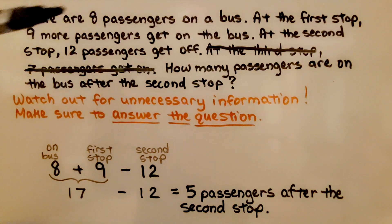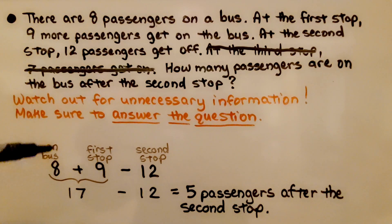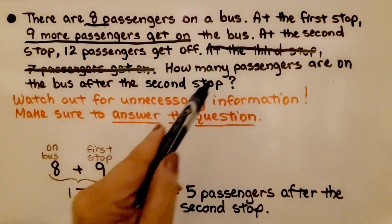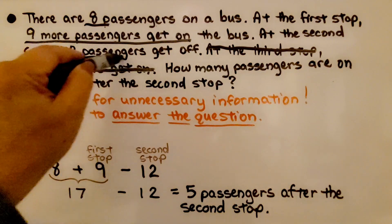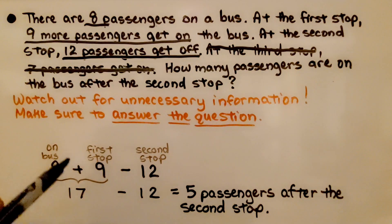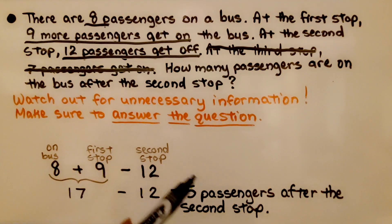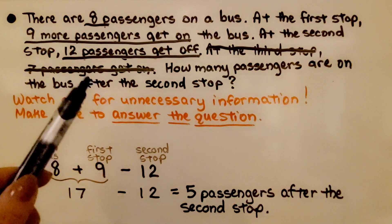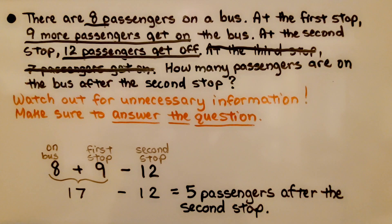There are eight on the bus in the beginning. Then at the first stop, nine more got on. Then at the second stop, 12 passengers get off. So we've got 8 plus 9 minus 12. Using order of operations from left to right: 8 plus 9 is 17, and 17 minus 12 is 5. That means five passengers are on the bus after the second stop. Make sure to answer the question being asked, and watch out for tricky word problems that have unnecessary information.